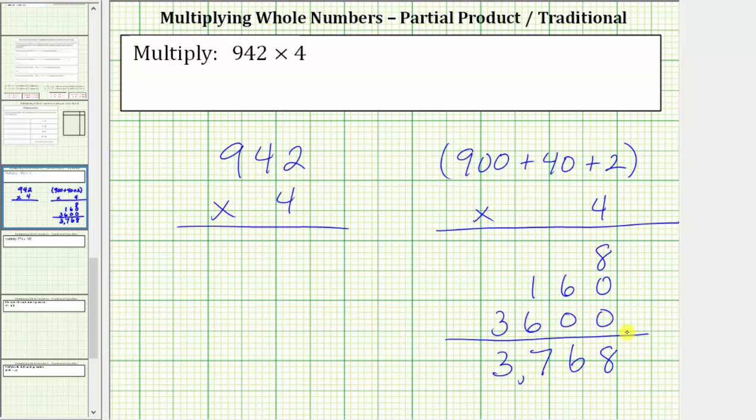And now let's determine the product using a traditional algorithm. To begin, we multiply four and two. Four times two is equal to eight.